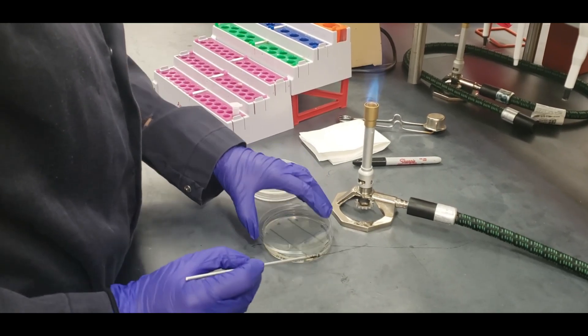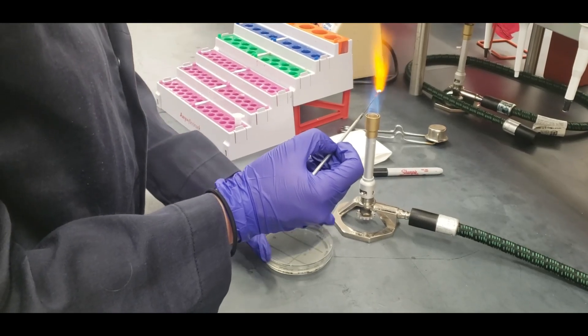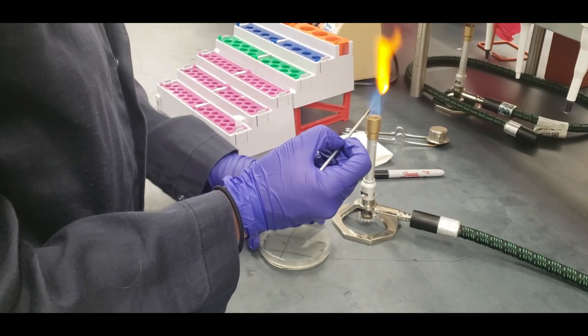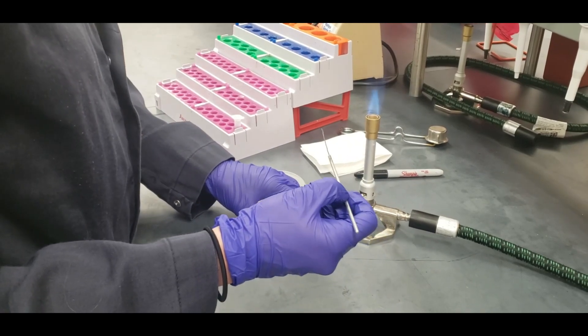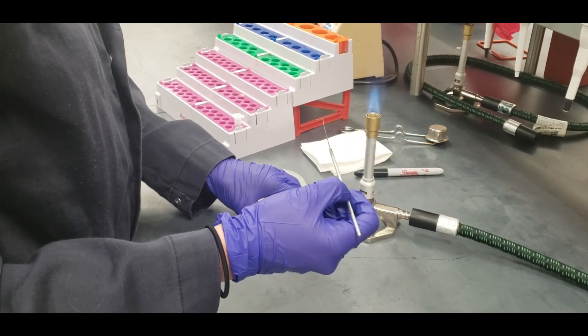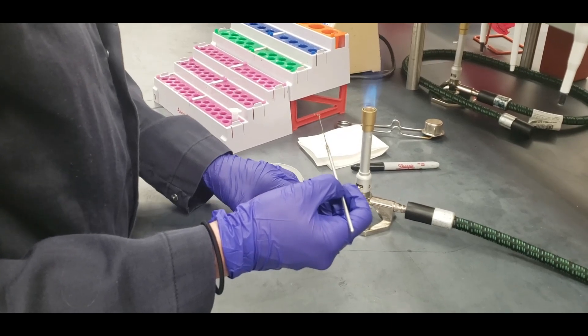Like I said, make sure you don't cross over into any other quadrants. Lastly, you're going to repeat the steps of sterilizing your loop, and you're going to only pull one time from quadrant three into quadrant four.